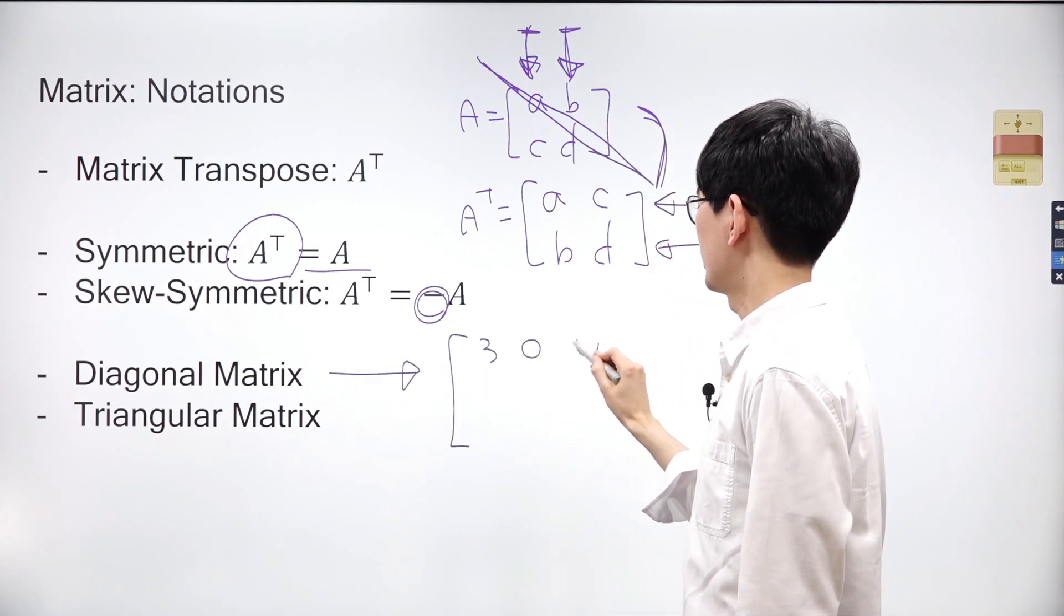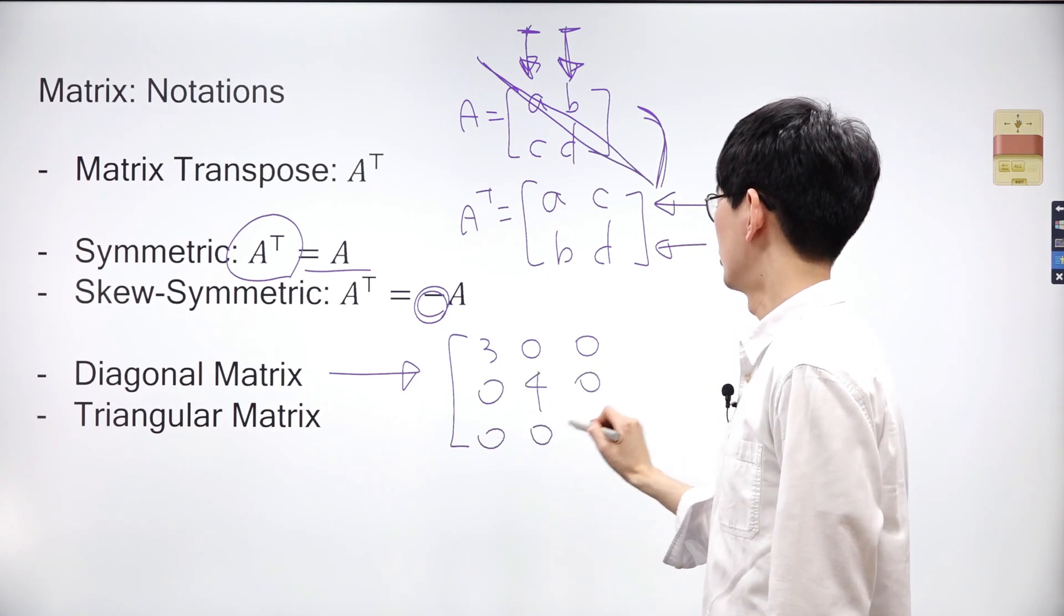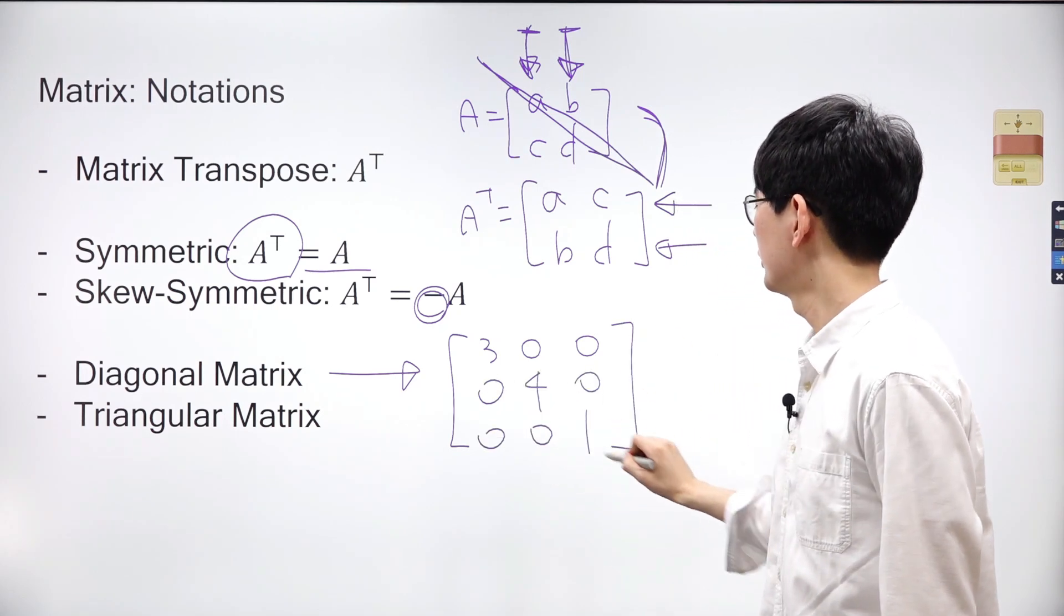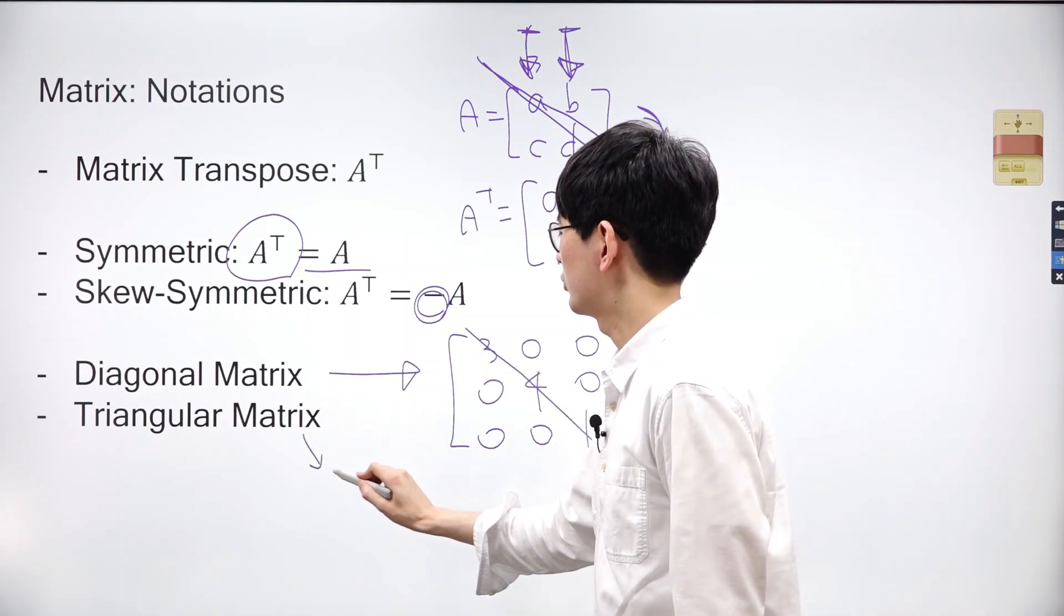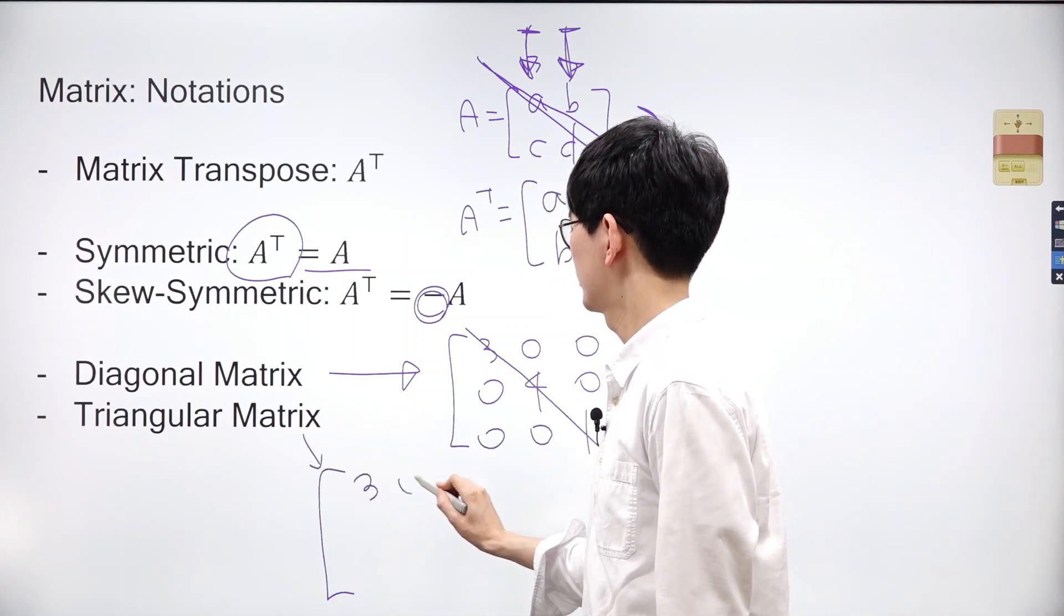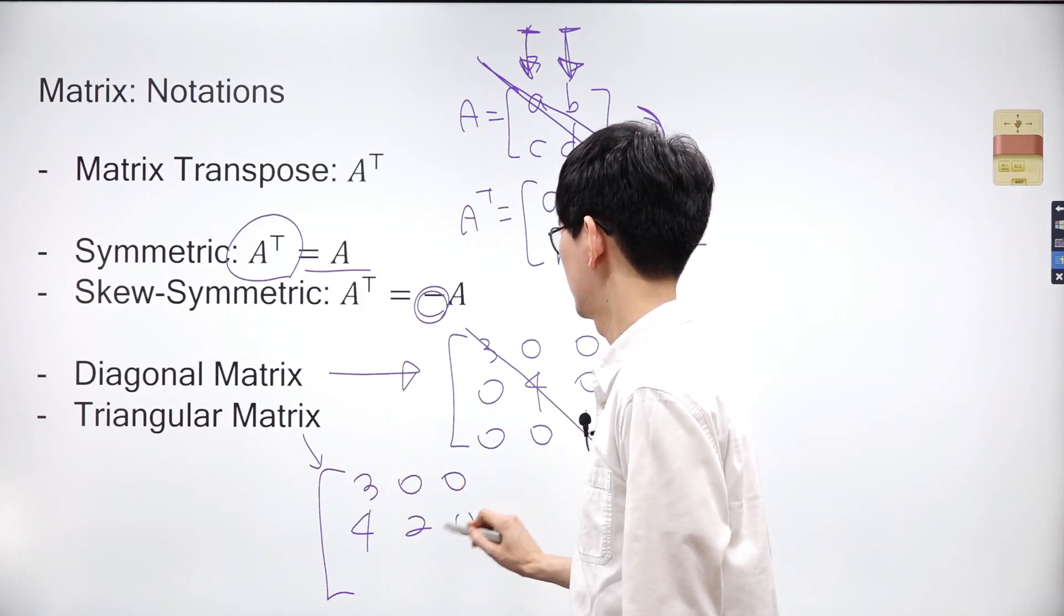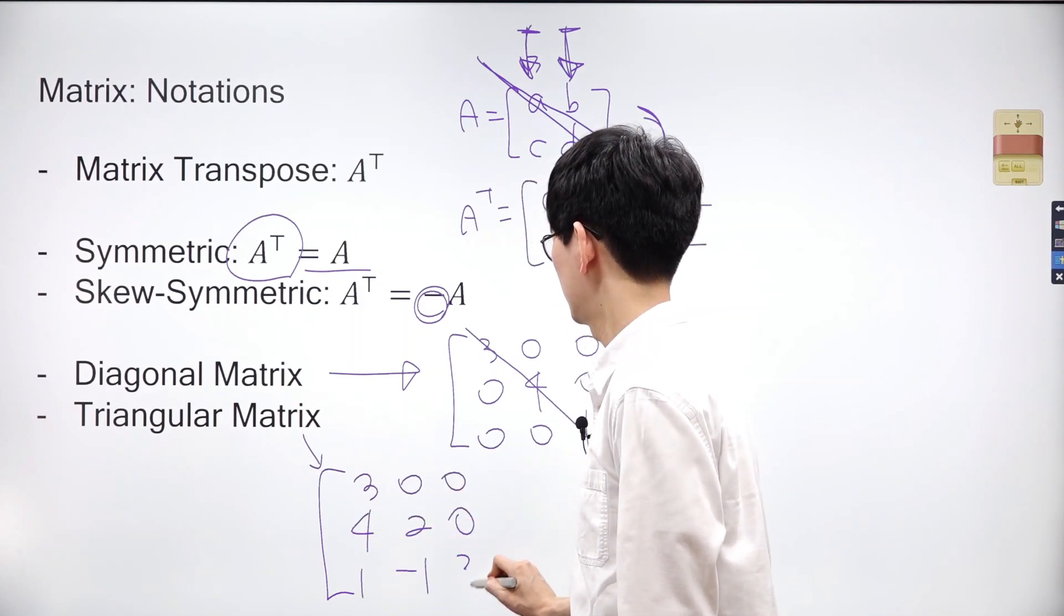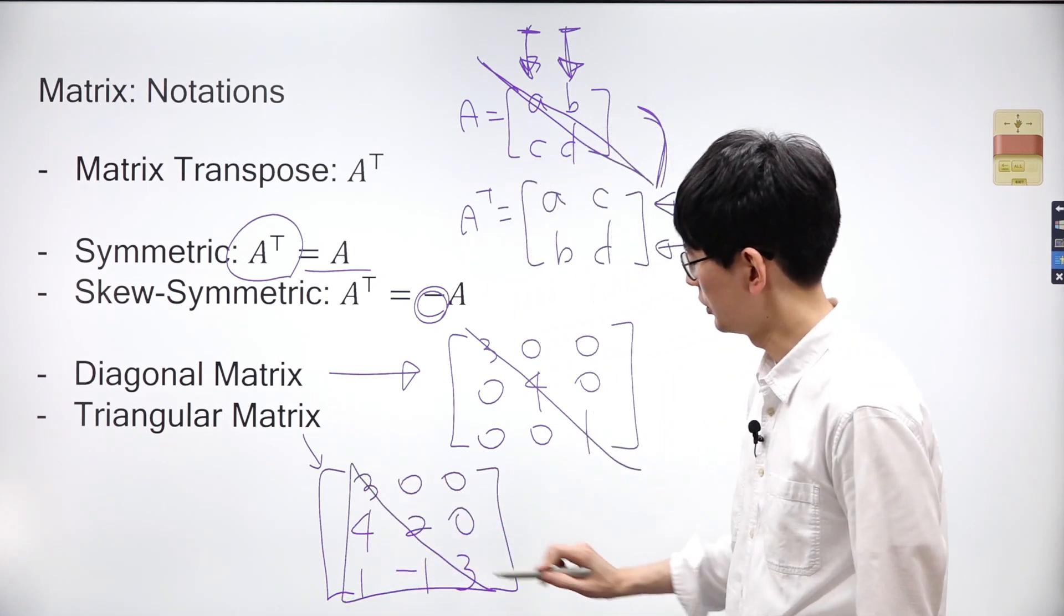A diagonal matrix is a square matrix where all elements outside the main diagonal are 0. The main diagonal of a matrix consists of the elements where the row index equals the column index.